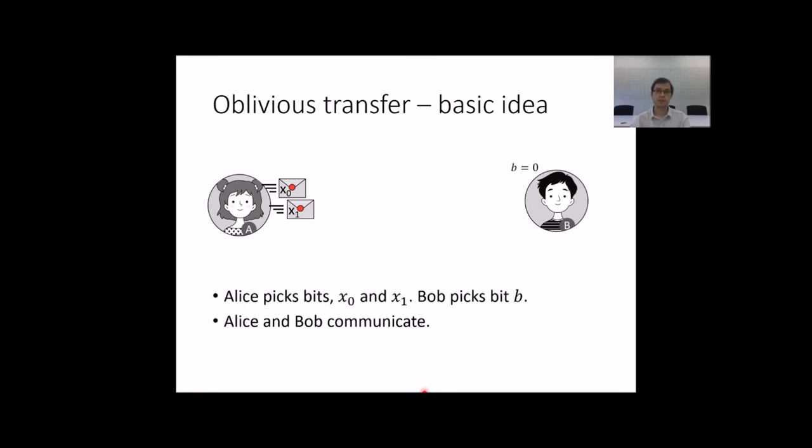Let's first introduce the basic concept of oblivious transfer. Alice has two bits, x0 and x1. Bob picks bit b, for example b equals 0. Then they communicate. Bob receives bit xb based on his choice of b. Here, x0.